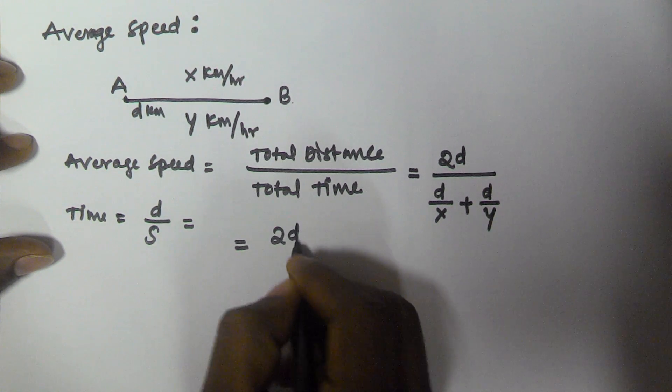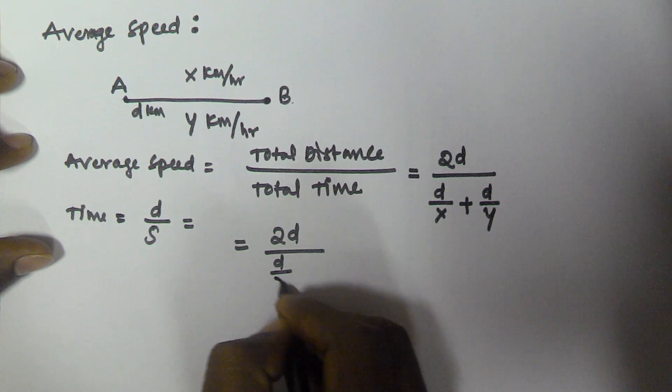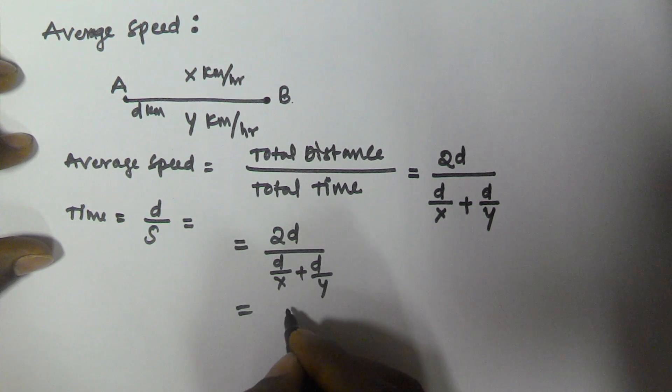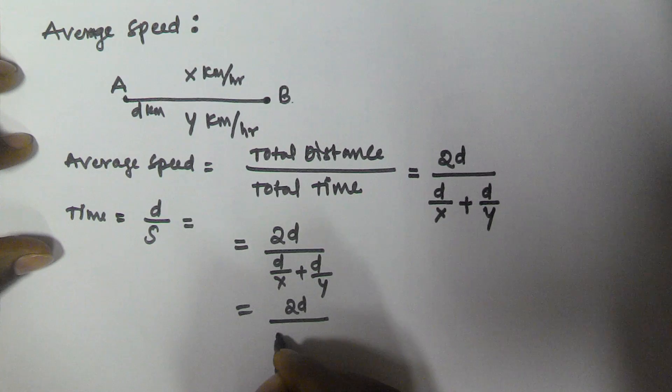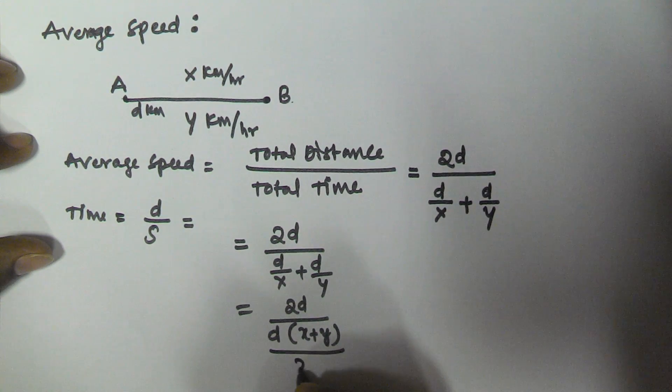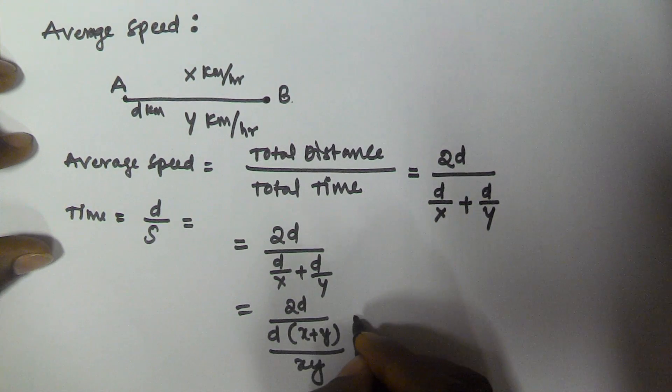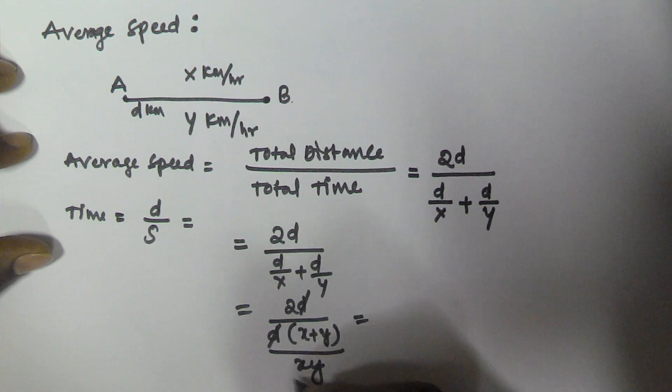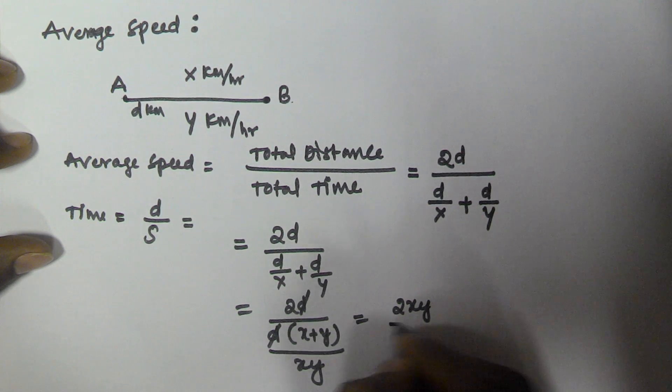So 2d by d by x plus d by y. This is going to be 2d by d into x plus y by xy. This is equivalent to 2xy by x plus y, with d cancelling.